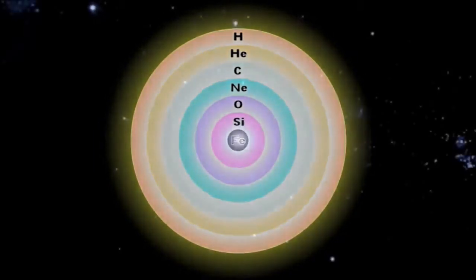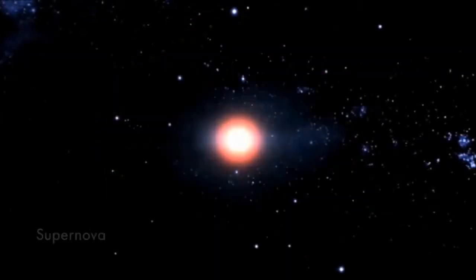The death of a star is the creation of the period 4, 5, 6, and 7 elements in a process called supernova nucleosynthesis.